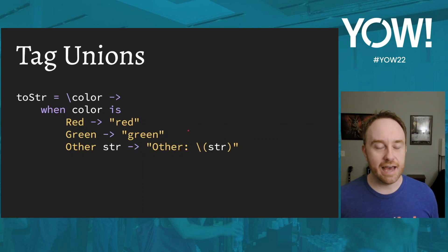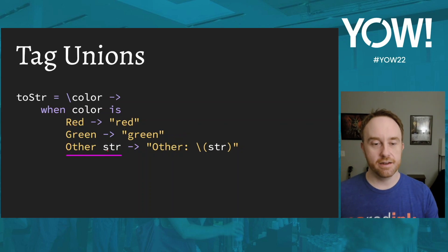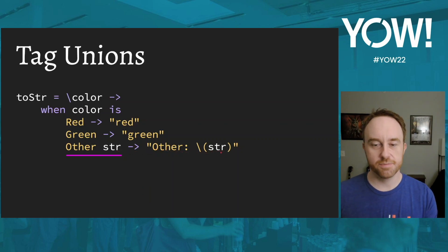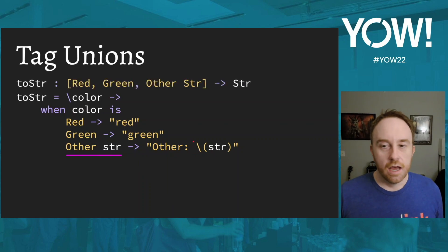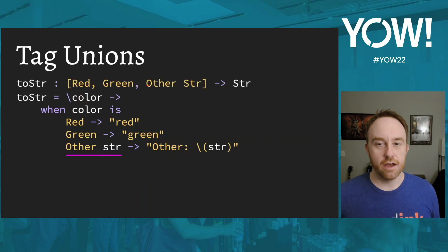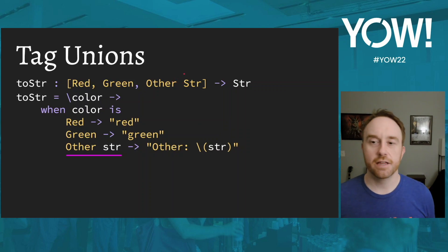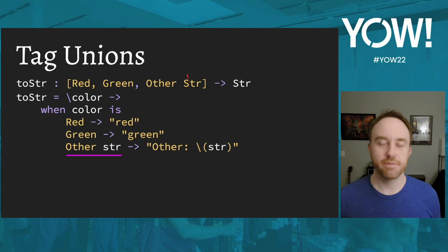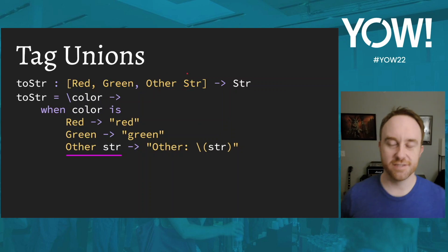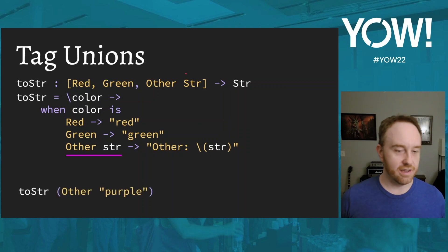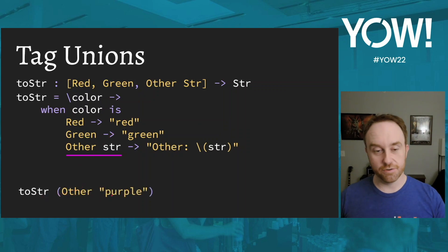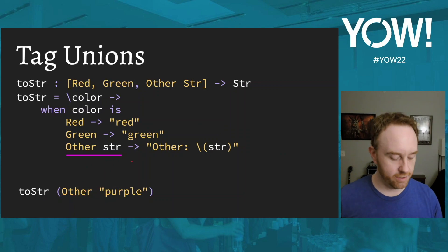You can also add payloads to tags. For example: Red, Green, and Other — where Other contains a string payload. Pattern matching on Other gives you that string. The inferred type is [Red, Green, Other(String)]. This is similar to how Problem in Rust had payload variants. Only Other has a payload here; Red and Green do not. This is standard sum type behavior.